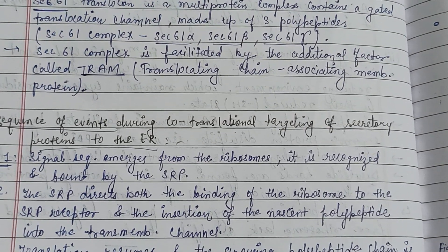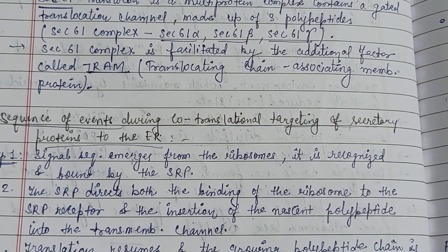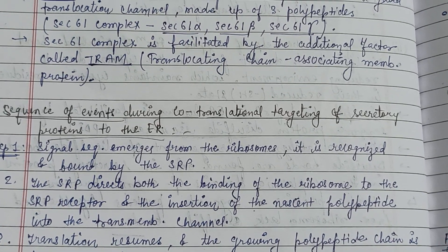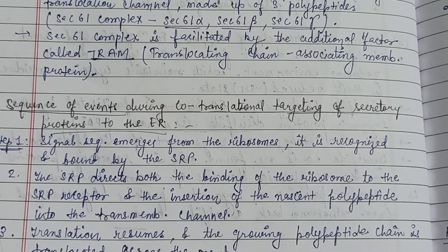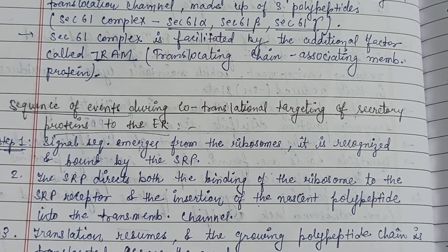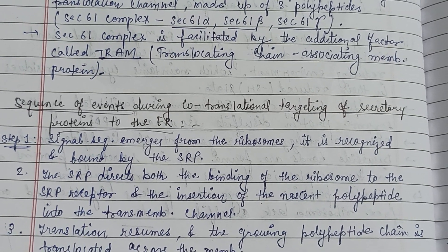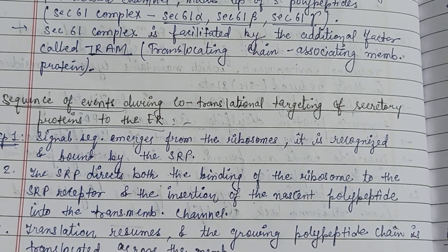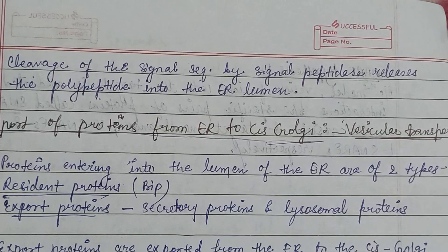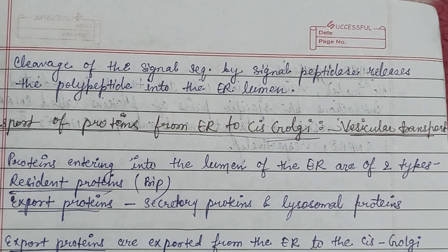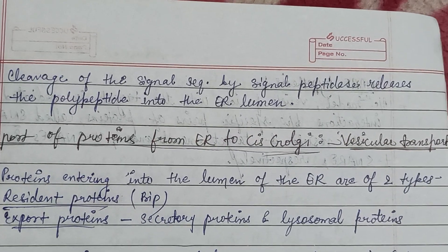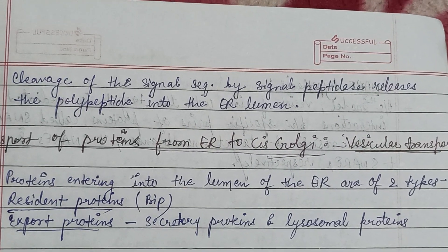The sequence of co-translational targeting of secretory proteins to the ER is as follows: first, the signal sequence emerges from the ribosome and is recognized and bound by the SRP. Then SRP binds the ribosome to the SRP receptor, and the nascent polypeptide is inserted into the membrane. Translation resumes, the growing polypeptide chain is translocated across the membrane, and cleavage of the signal sequence by signal peptidase releases the polypeptide into the ER lumen. Signal peptidase is also present in the ER membrane.